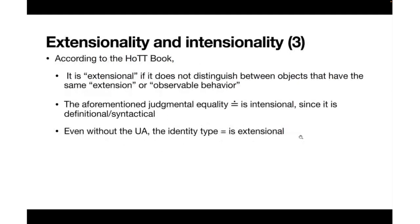We have two notions of sameness in homotopy type theory. The first is extensional and the second is intentional. Judgmental equality is intentional in the sense that it is definitional or syntactical, while the identity type is extensional: a concept is extensional if it does not distinguish between objects that have the same observable behavior or extension.